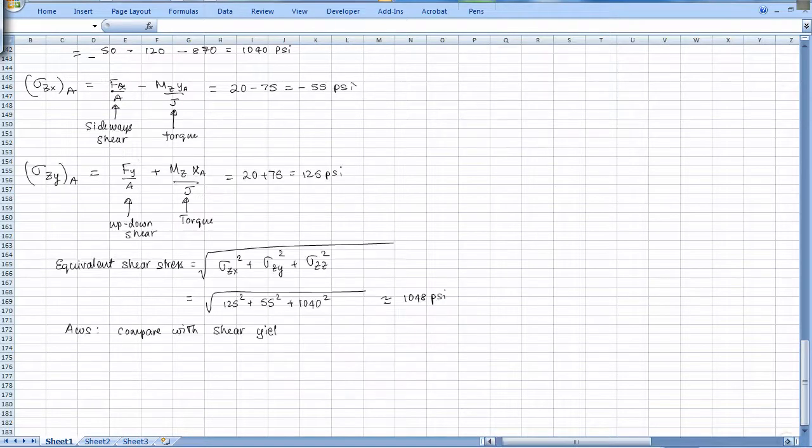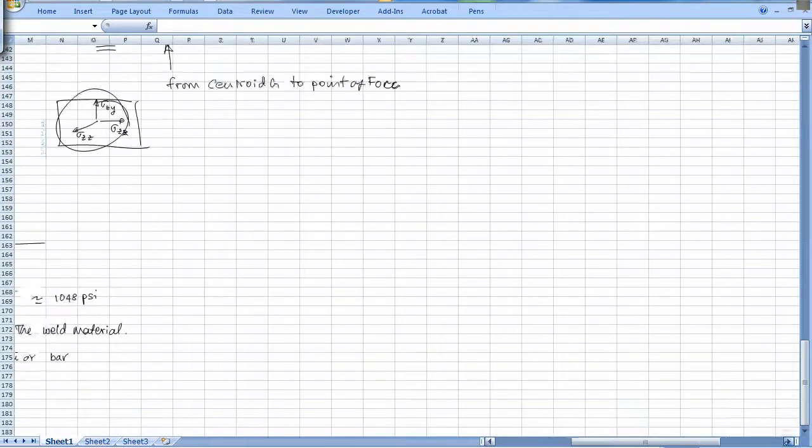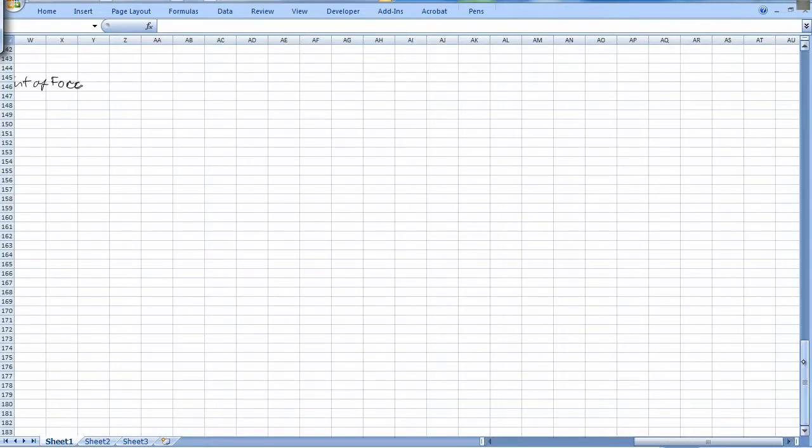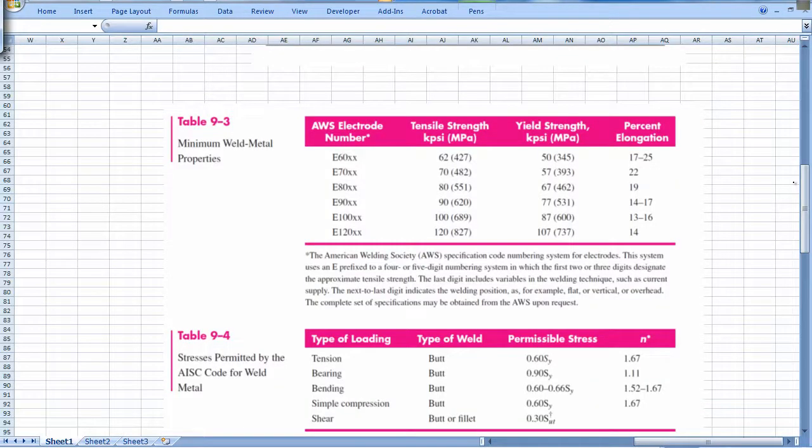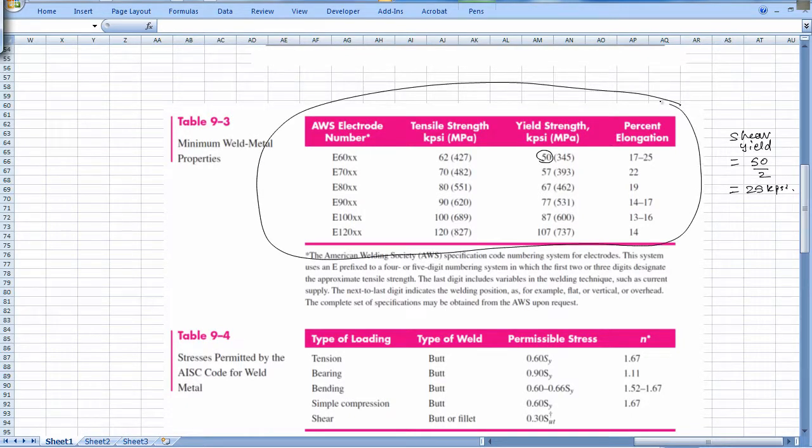Yield strength is 50 kpsi, so shear yield strength will be 50 divided by 2, which is 25 kpsi. This is what I use for comparison. This table decides whether the weld will fail.